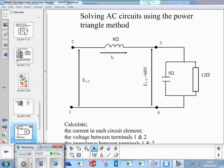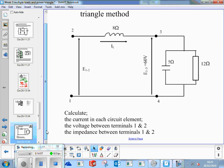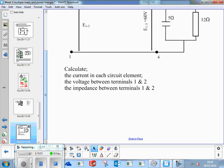Look at now, solving AC circuits using power triangle method. We've got a circuit here with 8 ohms of inductive reactance in series. So we're given a value for the inductive reactance, not a millihenry value of the inductor. At the terminals 3 and 4, you've got 60 volts. Then we've got a 5 ohm capacitive reactance in parallel with 12 ohms of resistance. Calculate the current in each circuit element, the voltage between terminals 1 and 2, and the impedance between terminals 1 and 2.